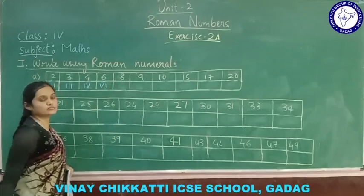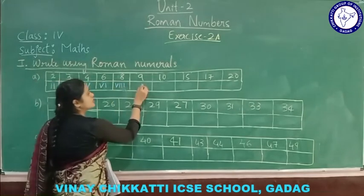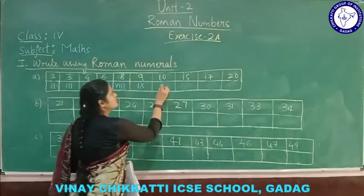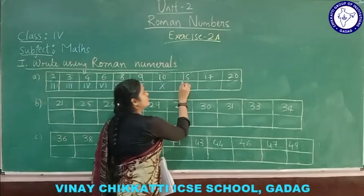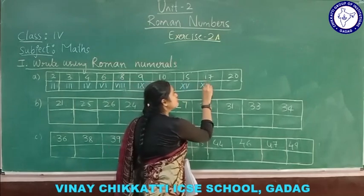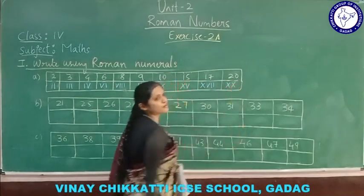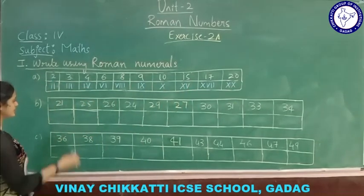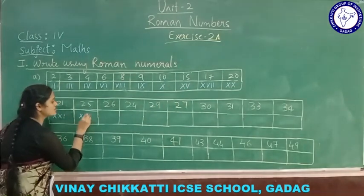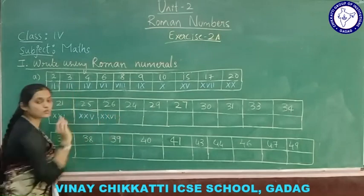10 is X. 15 is X V — 10 plus 5. 17 is X V I I — 10 plus 5 plus 2. 20 means two X symbols repeated: X X. 21 is X X I — two X and one I. 25 is X X V. 24 is X X I V — 20 plus 5 minus 1 equals 4, so X X I V.